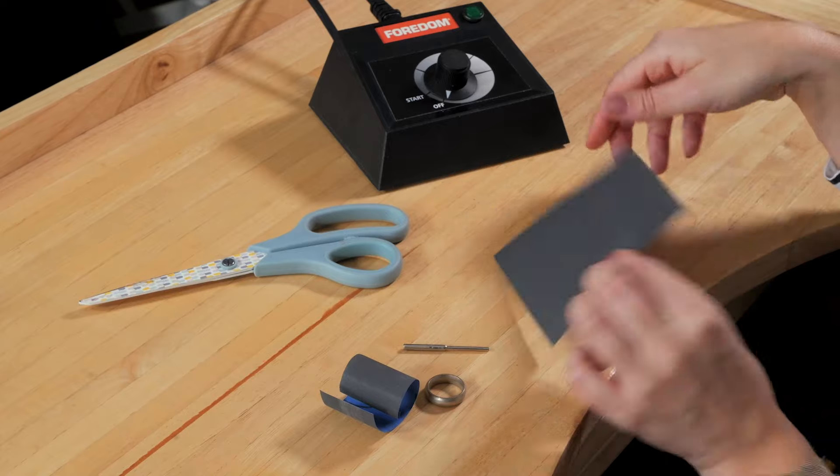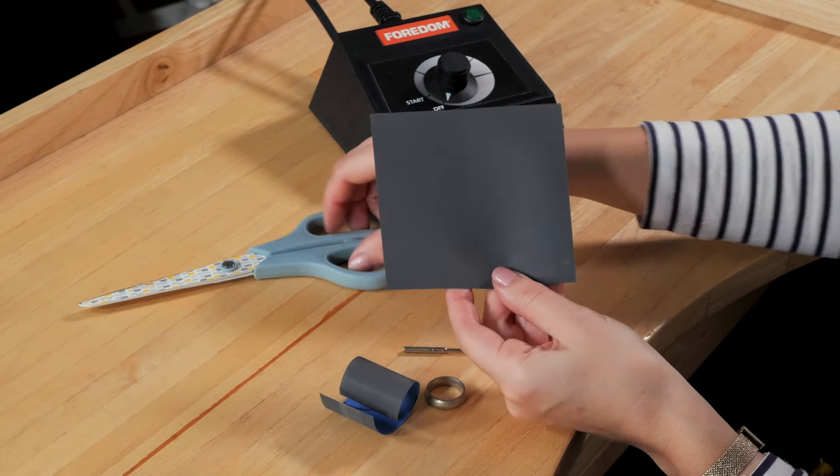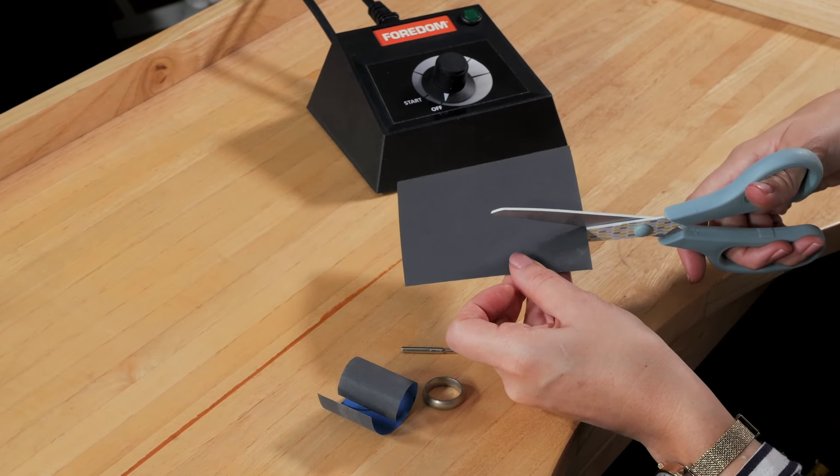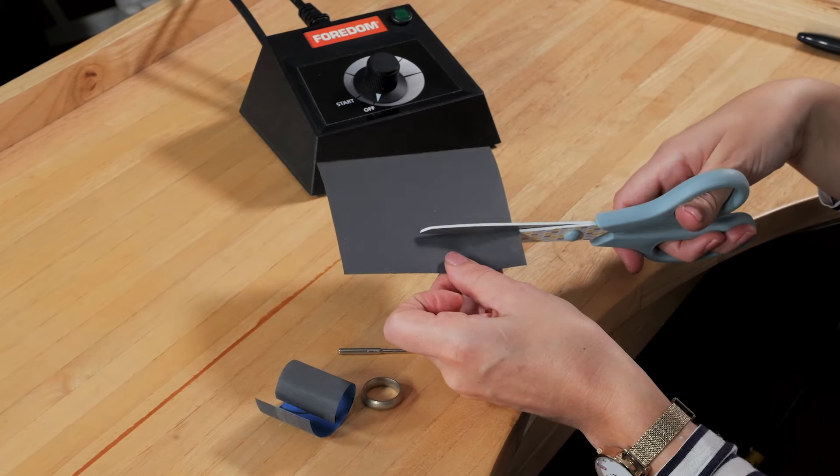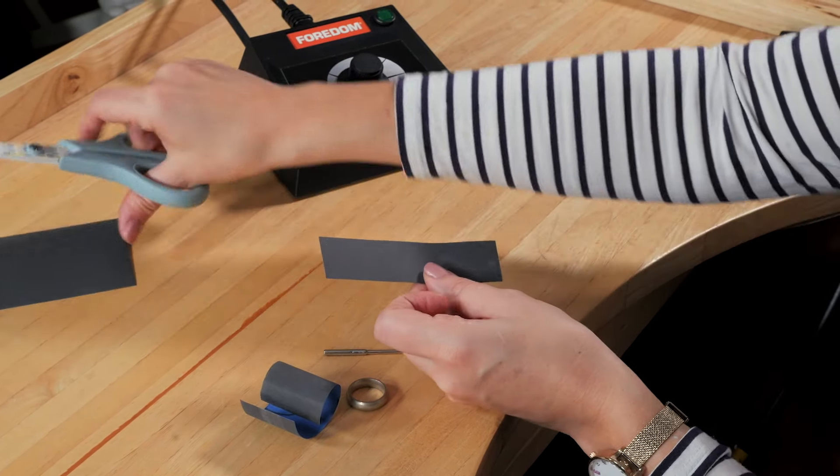So I'm going to take the emery paper that I need - this is 600 grade. It comes in lots of different grades and you can choose the one you want. Also choose the length of it. That one's quite long so I'm going to do a slightly shorter one this time and just cut a nice strip for yourself using your scissors.